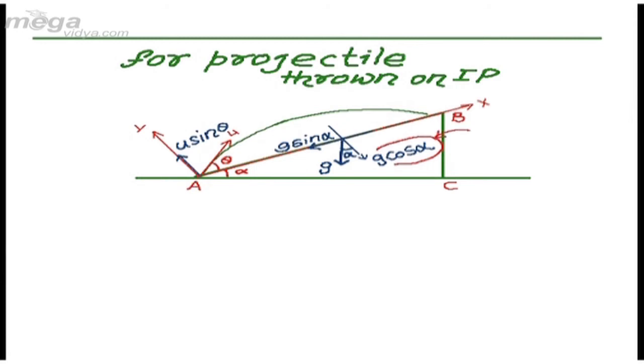Now here we can see that g cos alpha can be taken as a perpendicular, and u sin theta can be taken as u perpendicular. u sin theta is u perpendicular here, and g cos alpha is the acceleration perpendicular to the x direction.